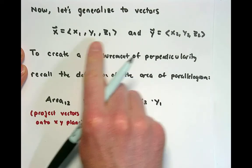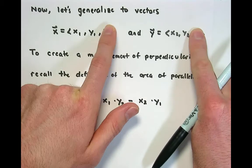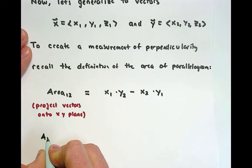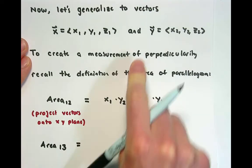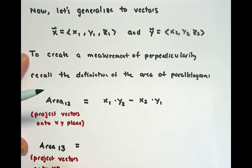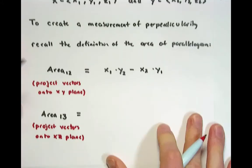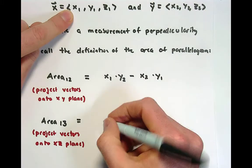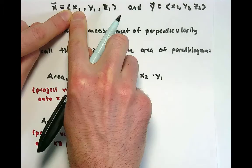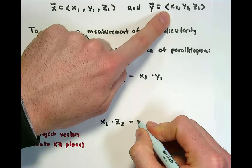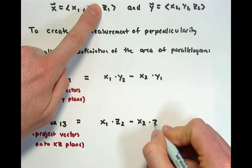We could do the same thing three times over. We got that first one by deleting the z component. Maybe we get the second one by deleting the y component. We'll call that area 1,3, because we're deleting the second component. This comes from projecting the vectors in R3 onto the xz plane by zeroing out the y component. The area of that parallelogram is x1 times z2 minus x2 times z1.